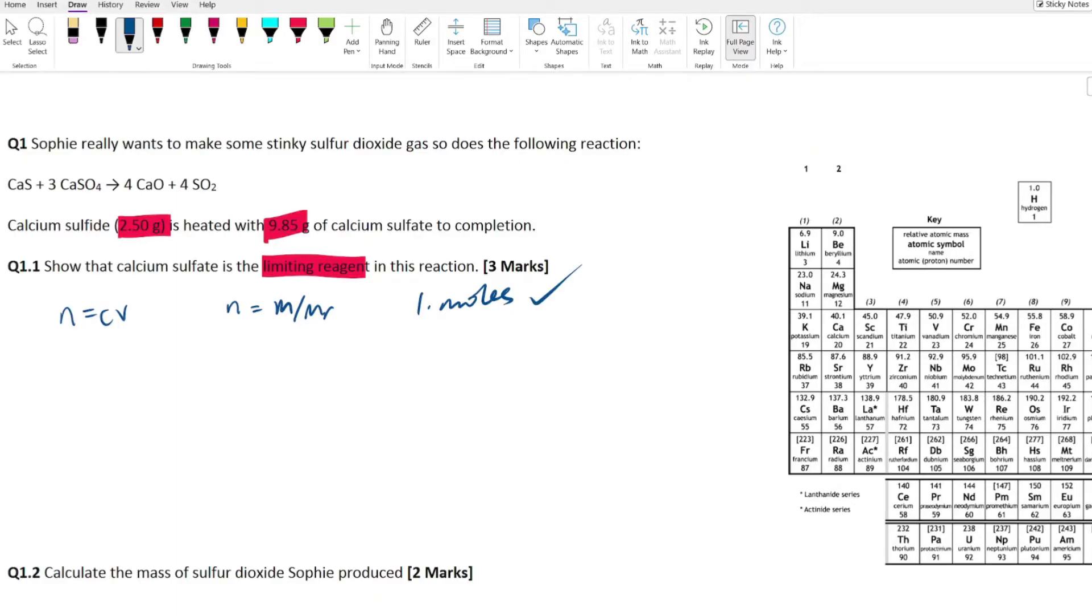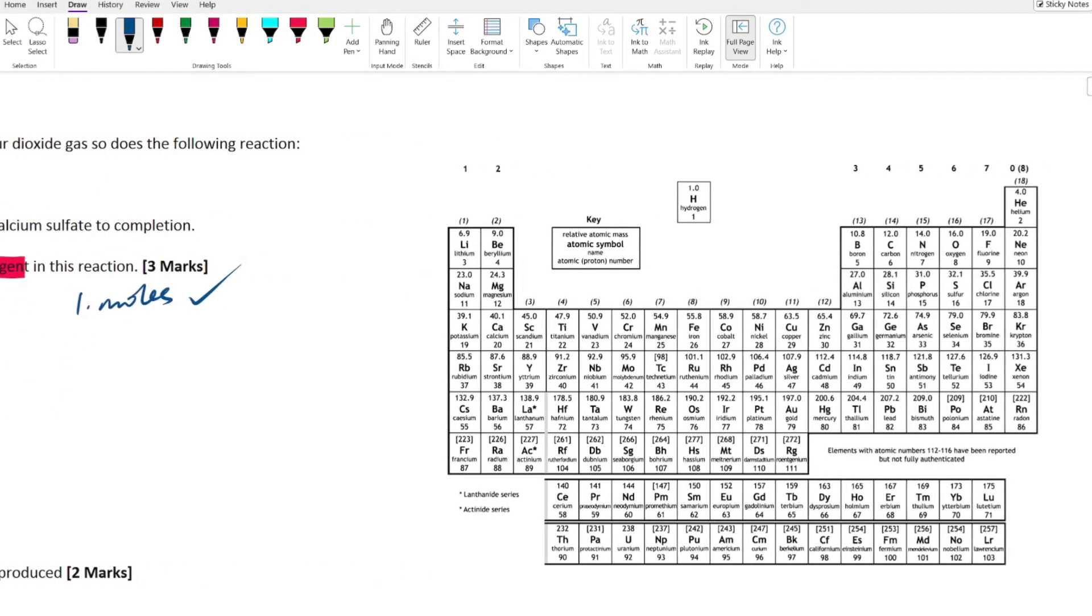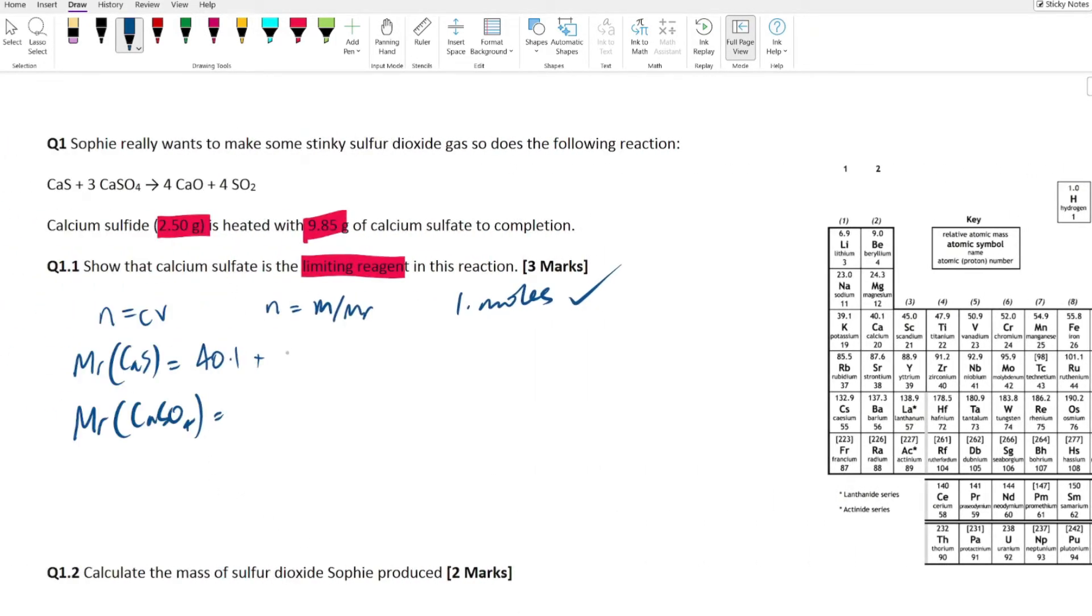So what we're going to do is we're just going to add each of the constituent elements up from the periodic table to work out our mr's. So if we do that right here, say mr of our calcium sulfide equals and we're going to have the mr of our calcium sulfate equals.